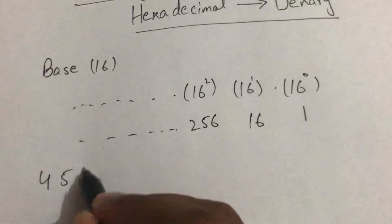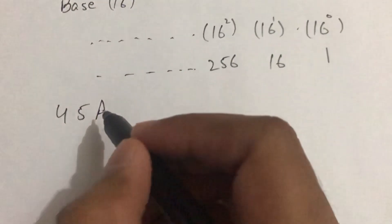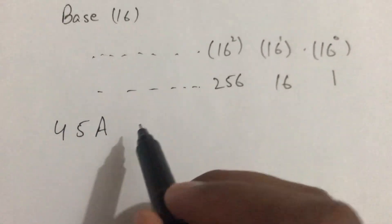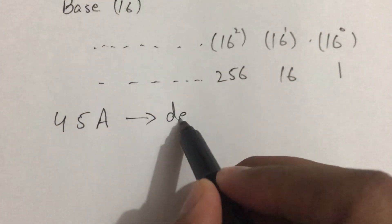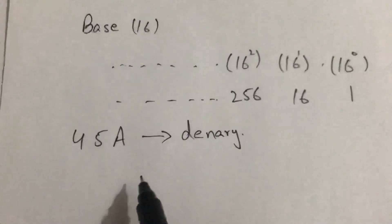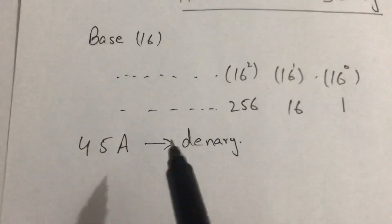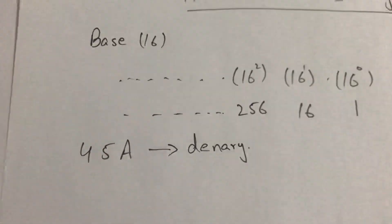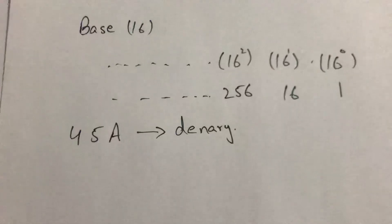45A, this is a hexadecimal number and we will convert this into denary number. So first of all, find the indices of these integers.